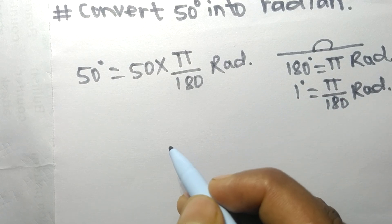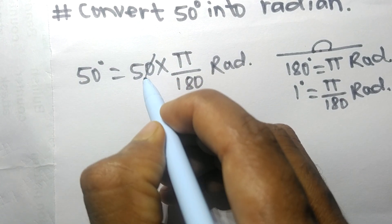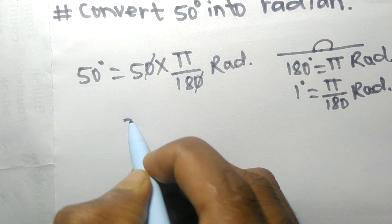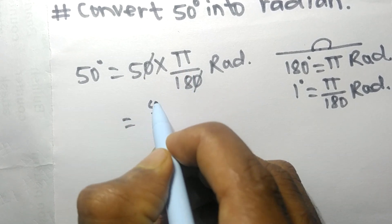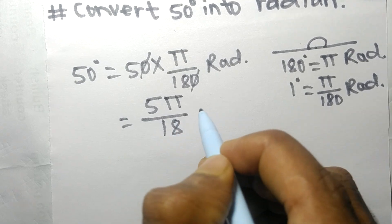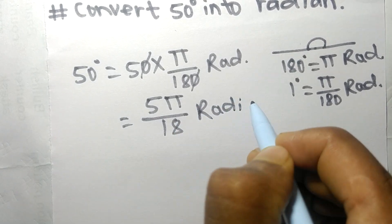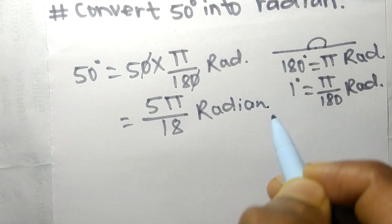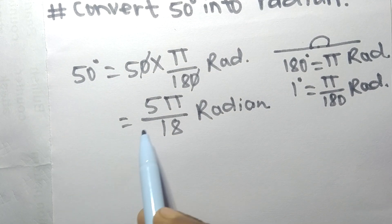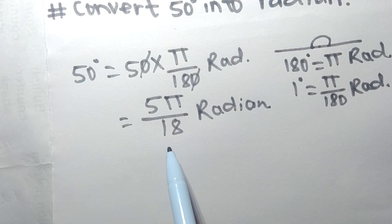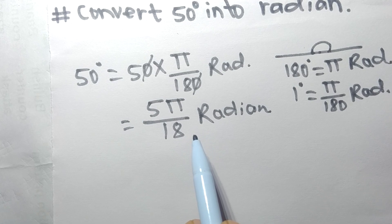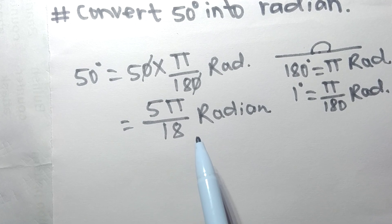Now we cancel the numbers — the zeros cancel, leaving 5. So 5 into pi by 18 radians. Therefore, 50 degrees is equal to 5π/18 radians. That's all for today, and thanks for watching.